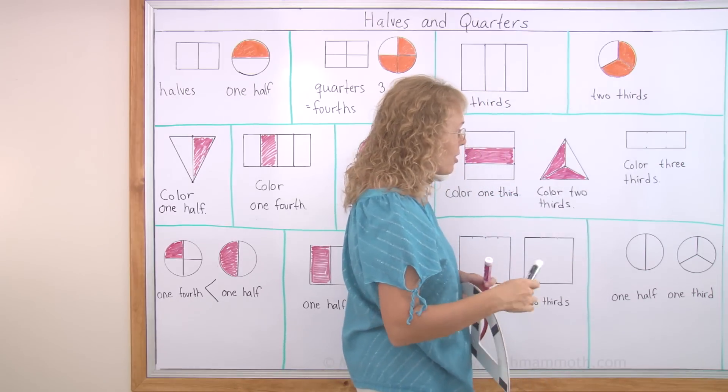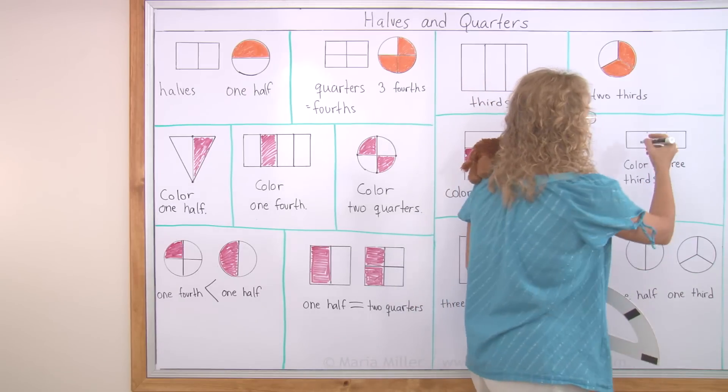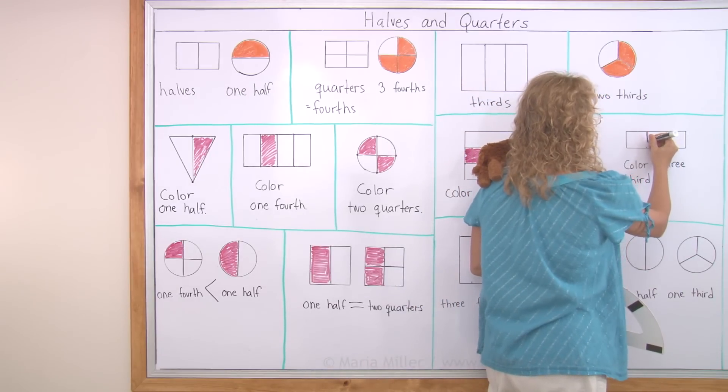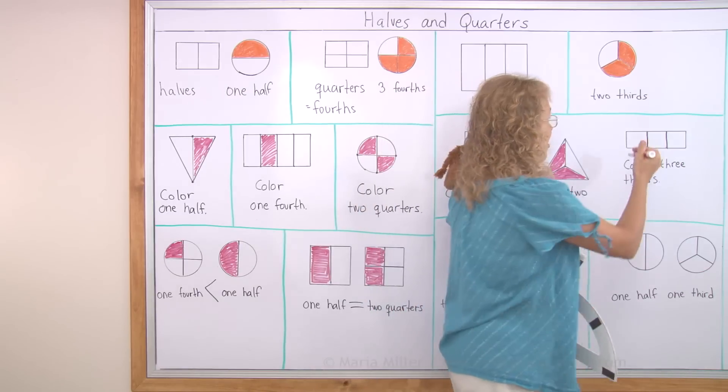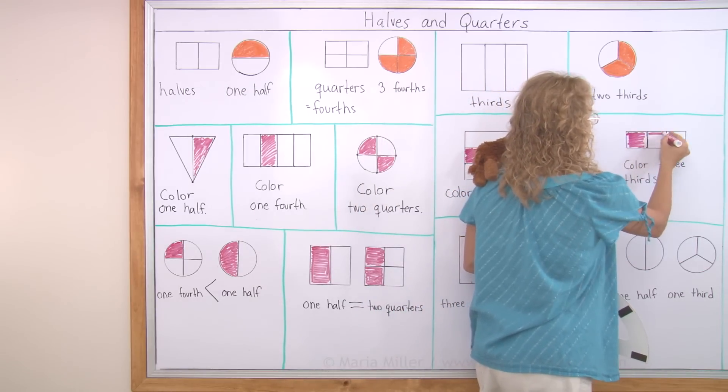Color three thirds. Okay. Well, that should work out just fine. First divide it into thirds, then color three thirds. Or in other words, color the whole thing. There's three thirds colored.